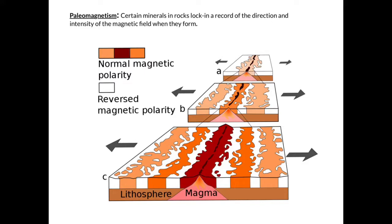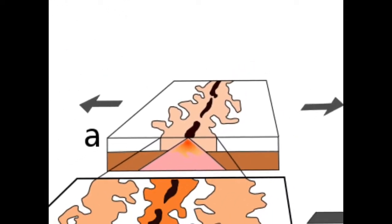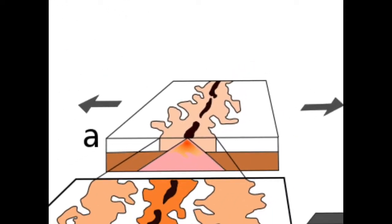Basalt is an igneous rock and it records traces of the magnetic signature from when it first crystallized. So looking at this figure here, this will be our first period of time. We have this magma rising up to the surface. We're going to say that our magnetic north is positive currently, so we're getting positive values. Magnetic north is the same as true north, sort of like the conditions we have today. So we'll get positive values on each side of this mid-ocean ridge here.